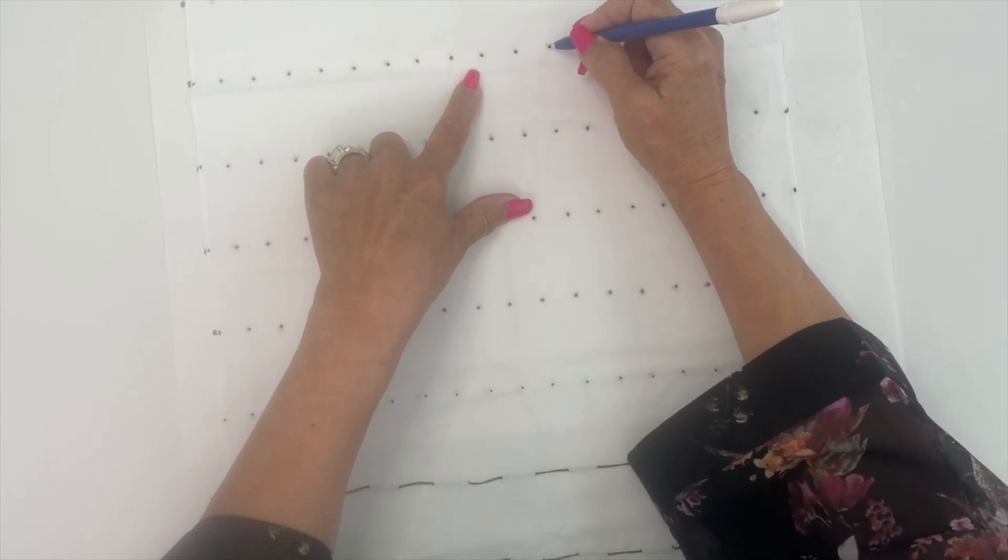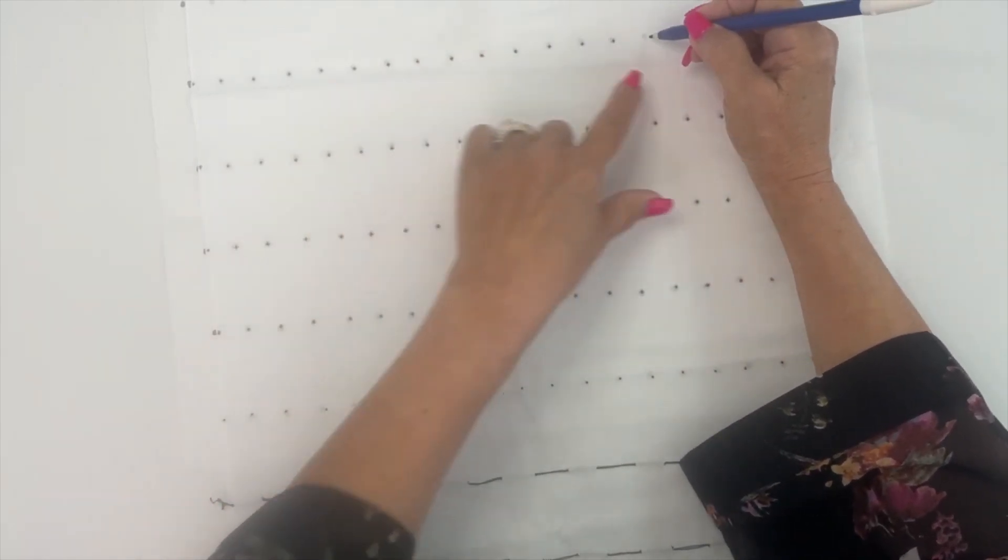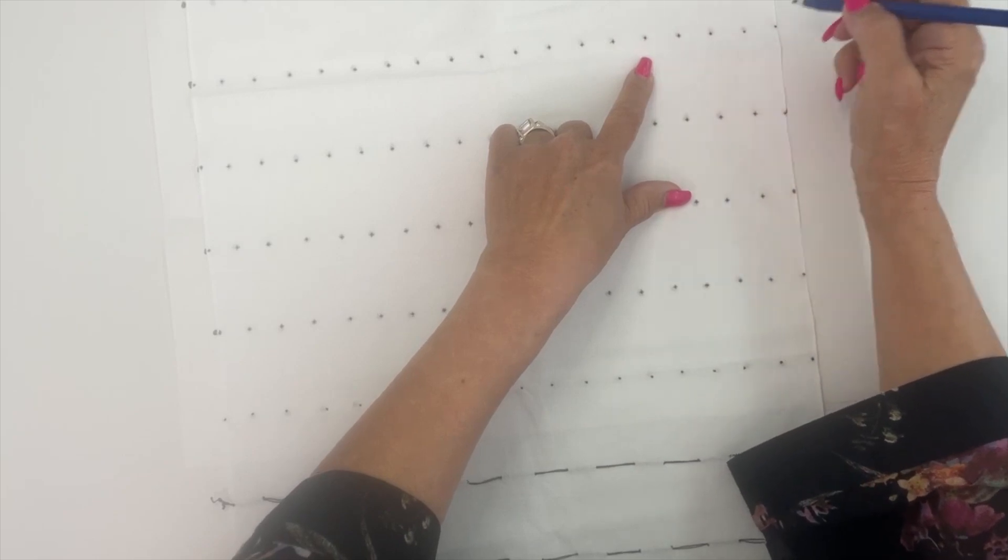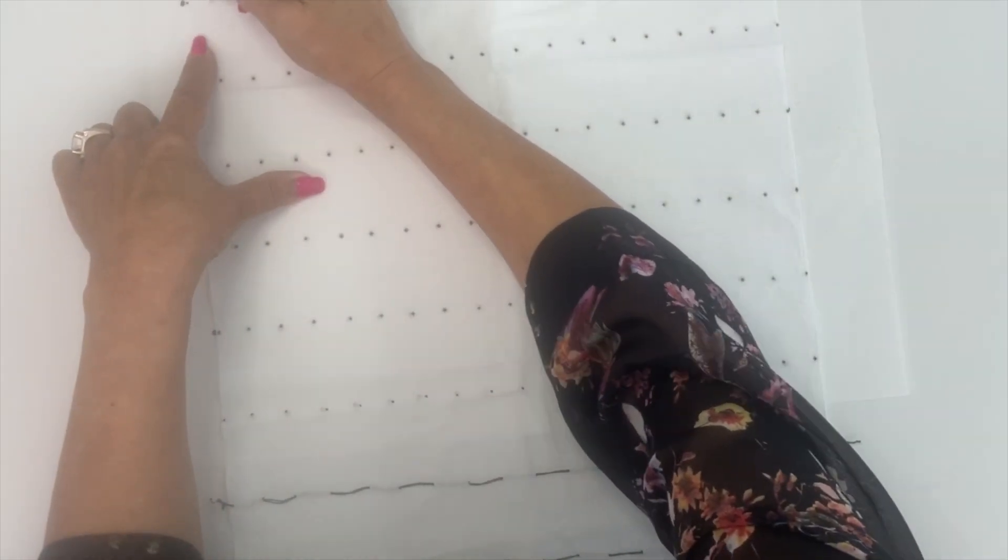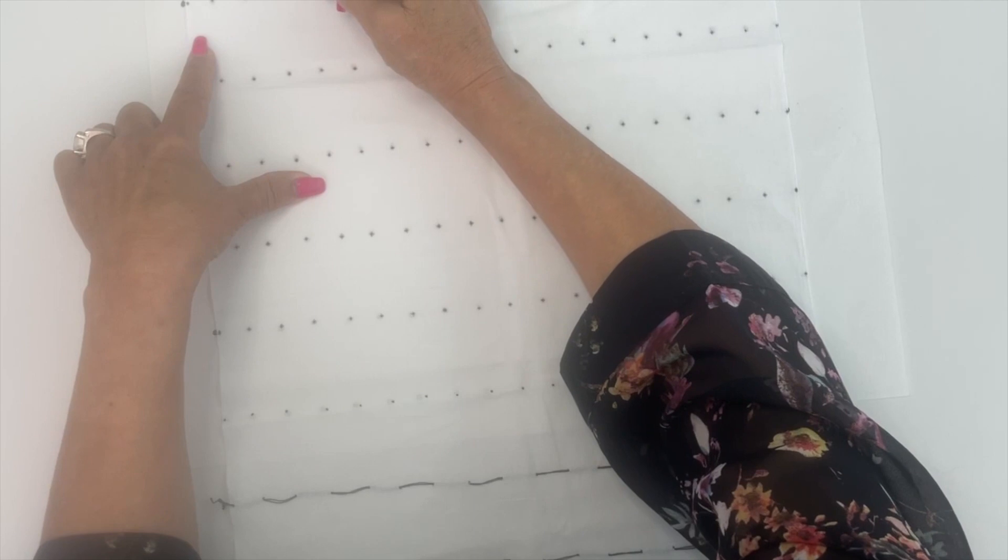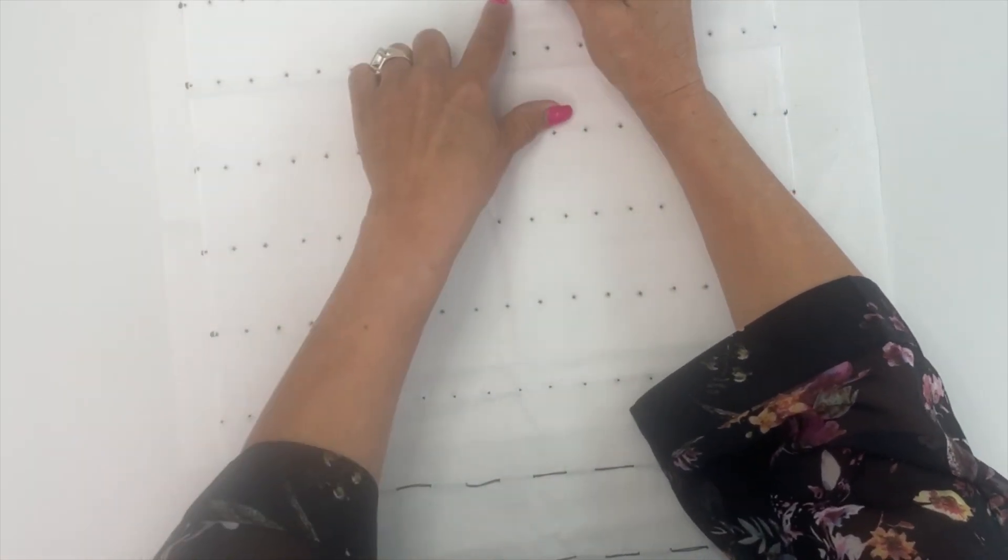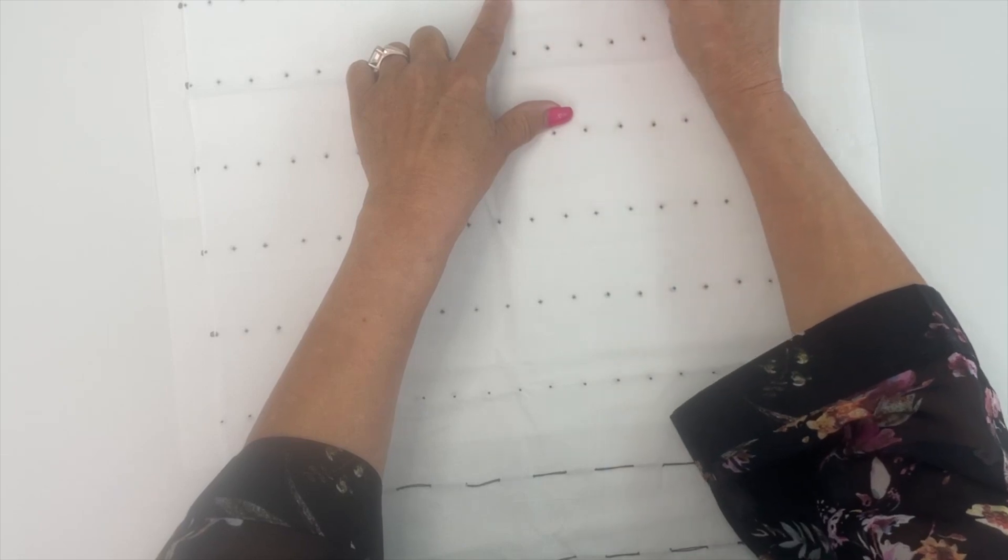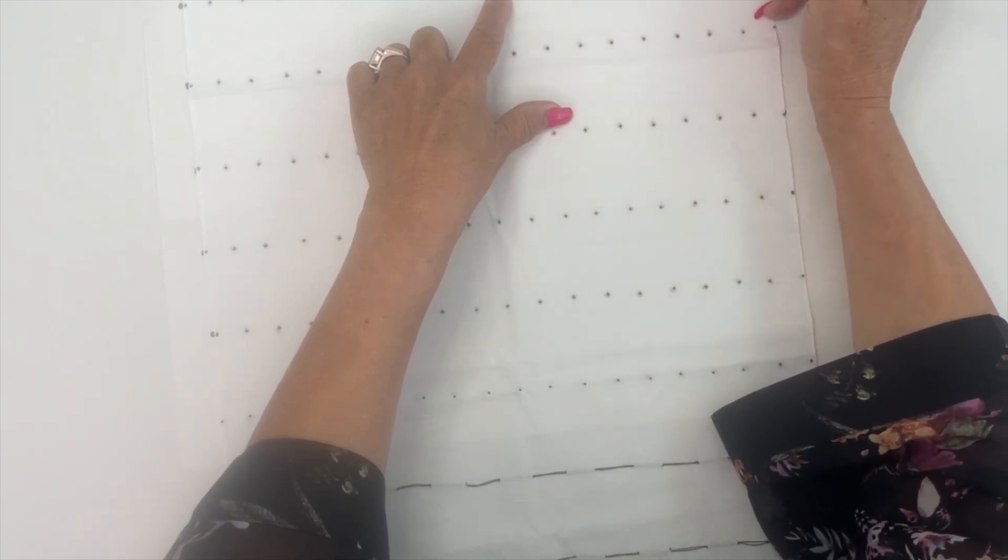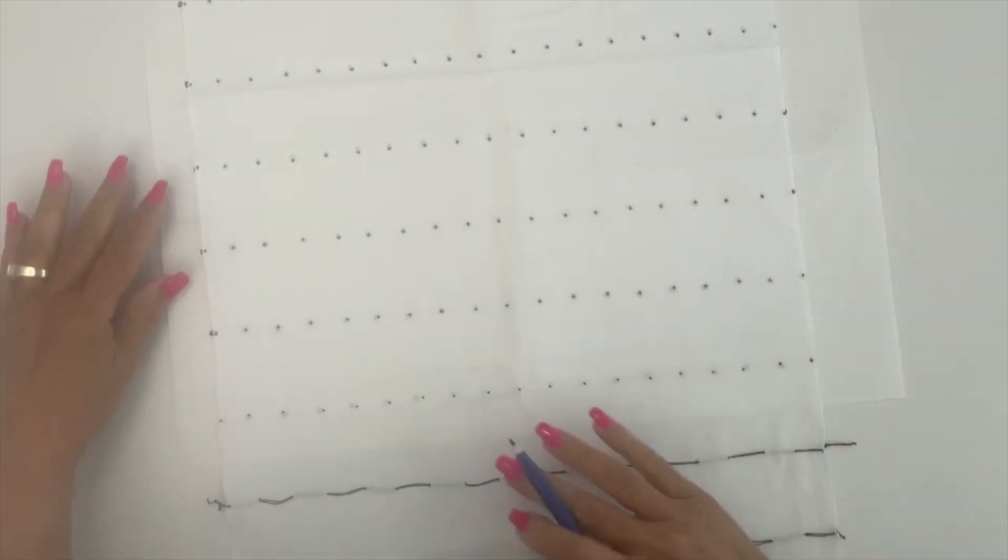Once we get to Japan and we're at the workshop with Brian, he's going to examine this work and make sure all the stitches are pulling correctly. Then he's going to show us how to pull this into an accordion configuration and we're going to do some additional stitching on top that will create different patterns.